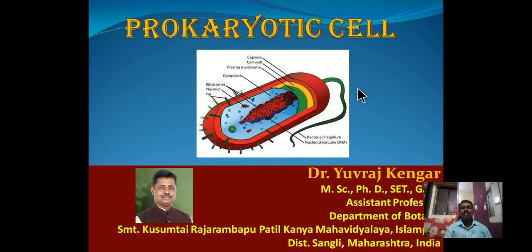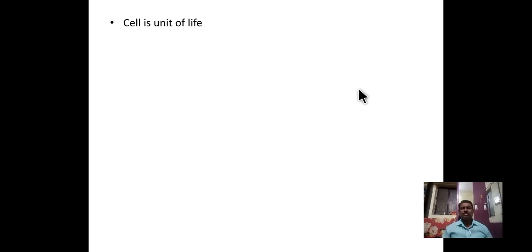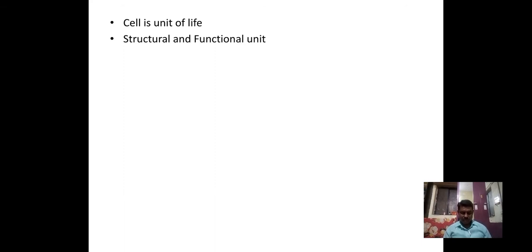Now we are learning the prokaryotic cell. The cell is a unit of life — the basic unit of all living organisms — which is the structural and functional unit. Every organism consists of a single cell or many cells. The cell can be defined as the structural and functional unit of a living organism. The cell is a microscopic unit made up of protoplasm, which is limited by a thin plasma membrane.